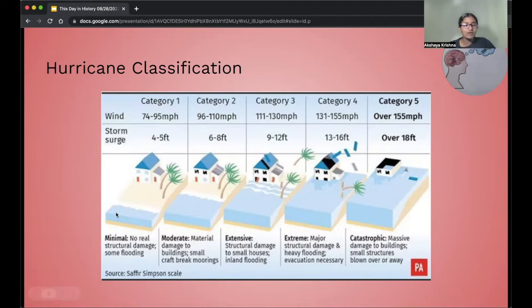Category 1 does really less damage, very minimal. There's no real structural damage done to the buildings, but there is a little bit of inland flooding. However, Category 5 has catastrophic damage. There's massive damage done to houses, buildings, and small structures are even blown or torn apart.